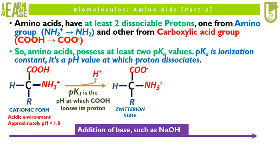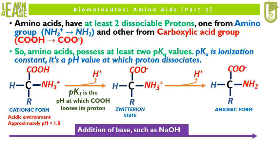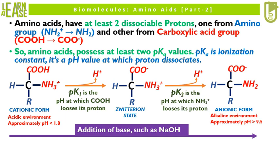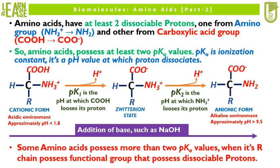On further increase in pH, NH3+ loses its proton and gets converted to NH2, and the amino acid now exists in anionic form. The pH at which NH3+ loses its proton is termed as pKa2. Some amino acids possess more than two pKa values, when their R chain possesses a functional group with dissociable protons.